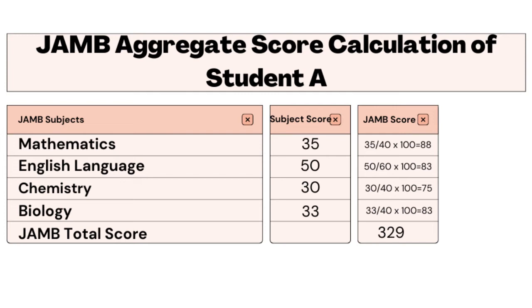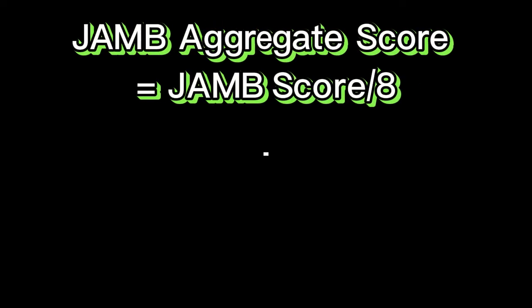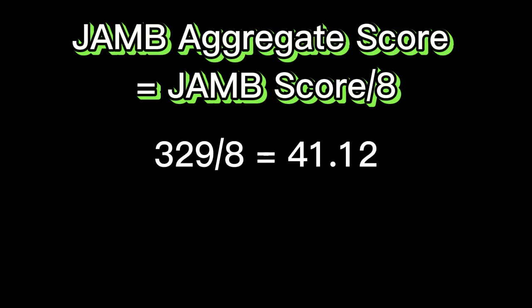Student A's total JAMB score is 329. To calculate Student A's JAMB aggregate score, you divide the JAMB score by 8. So 329 divided by 8 equals 41.12. That is Student A's JAMB aggregate score.